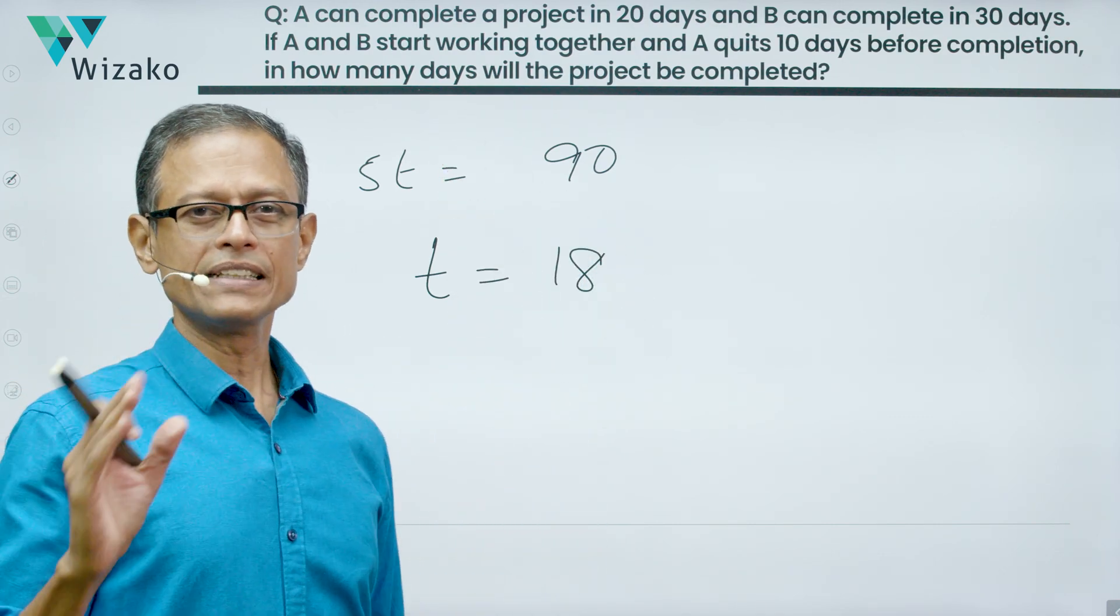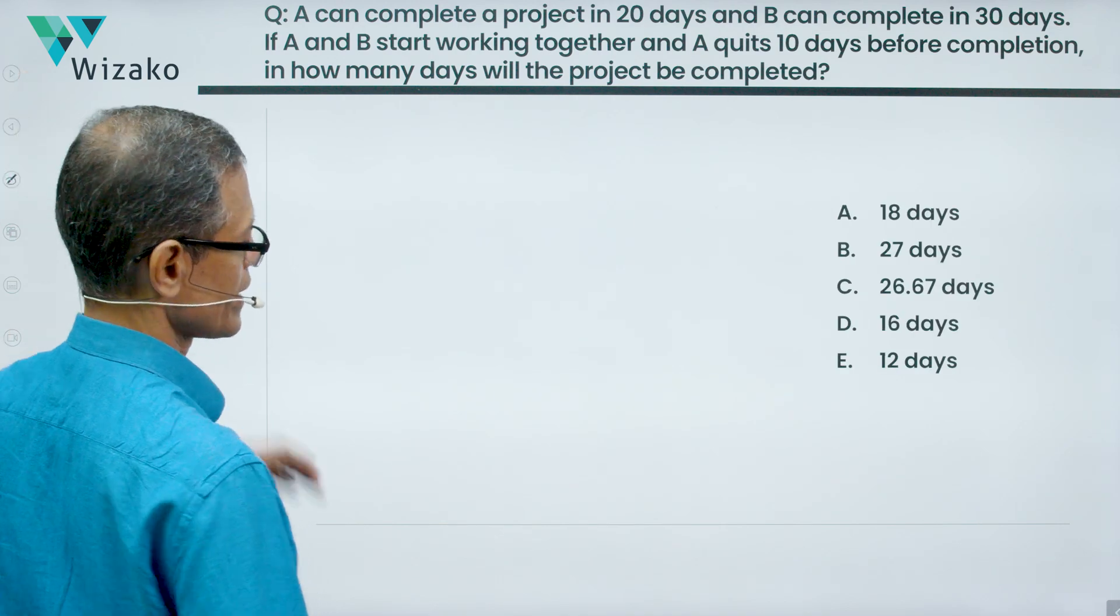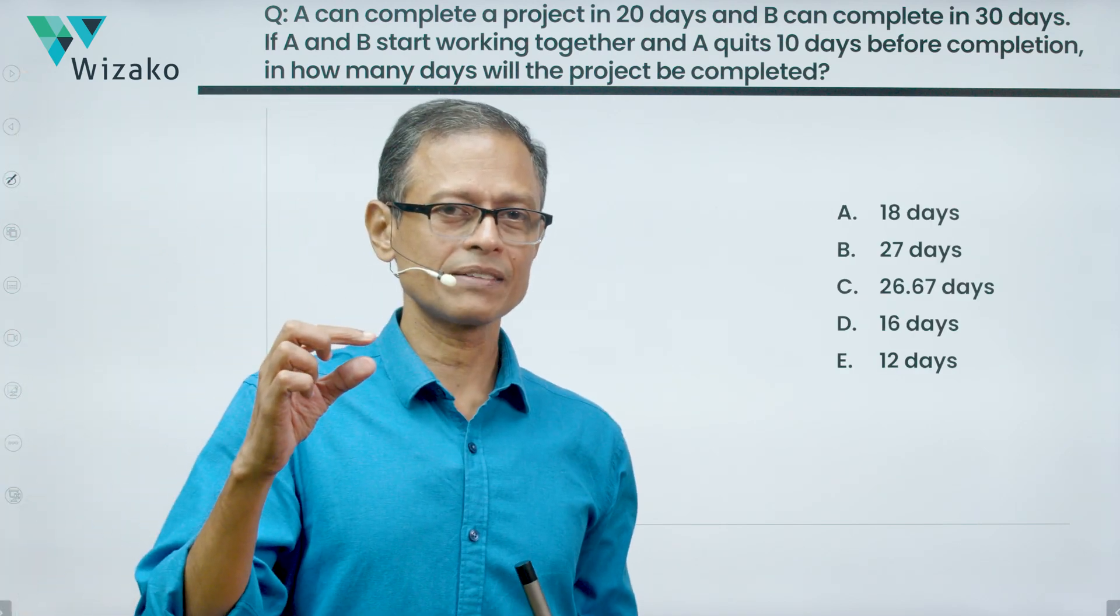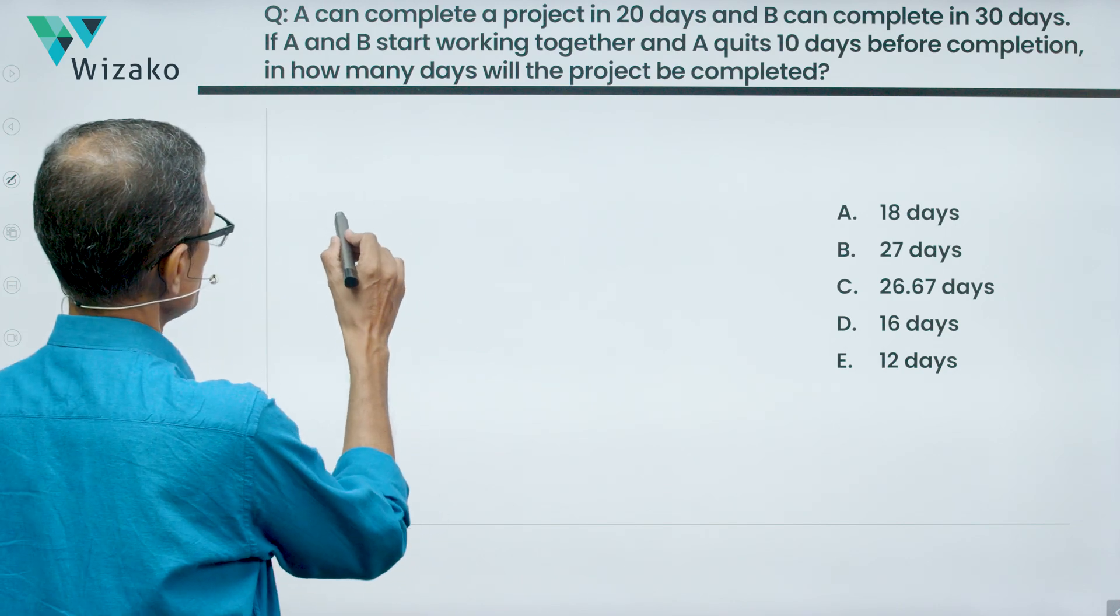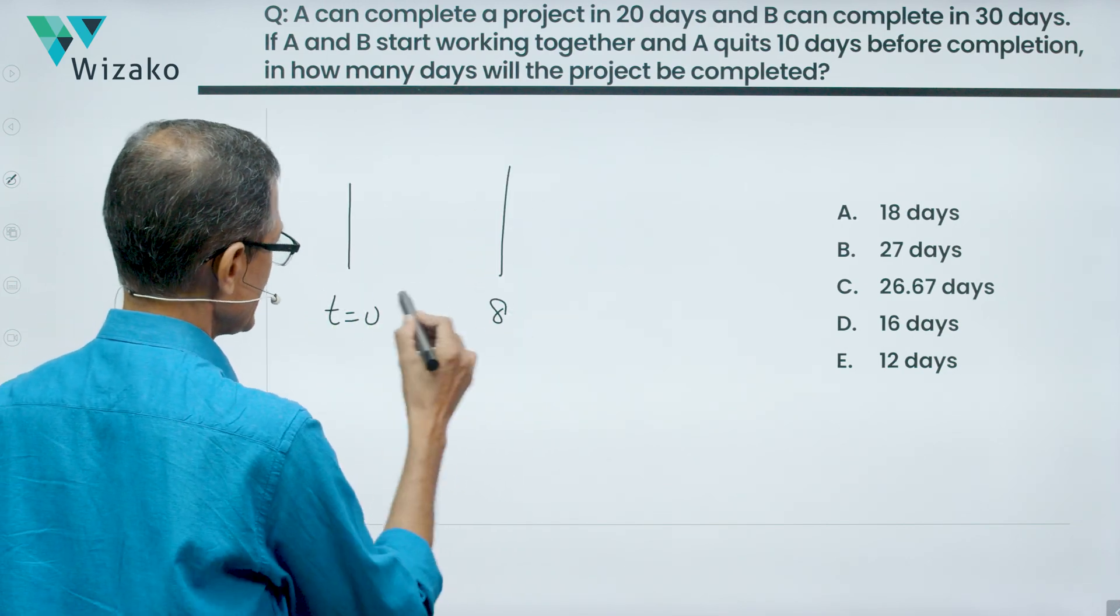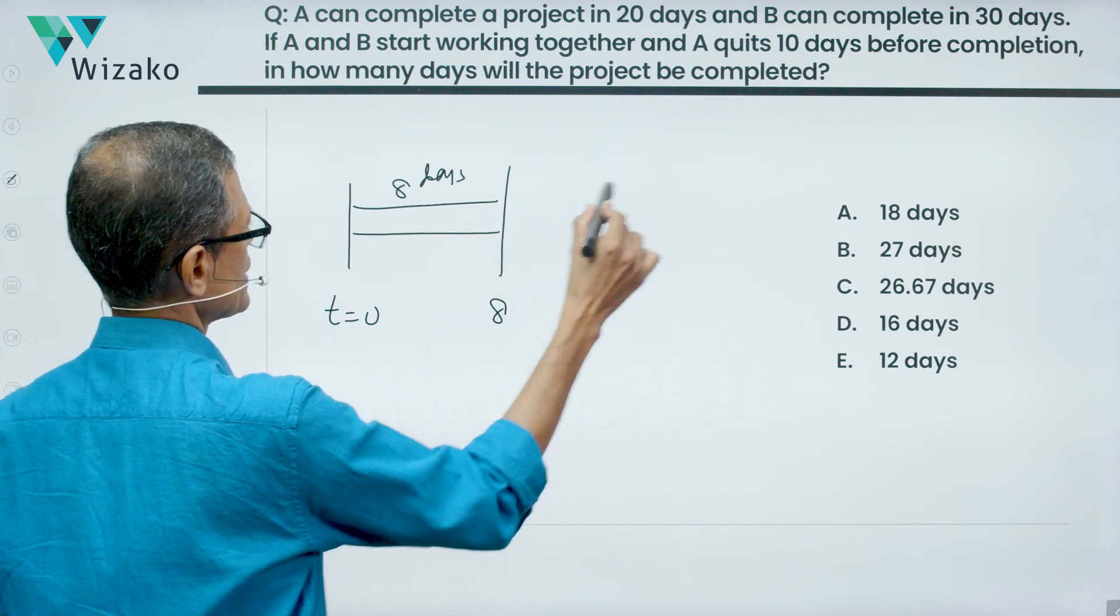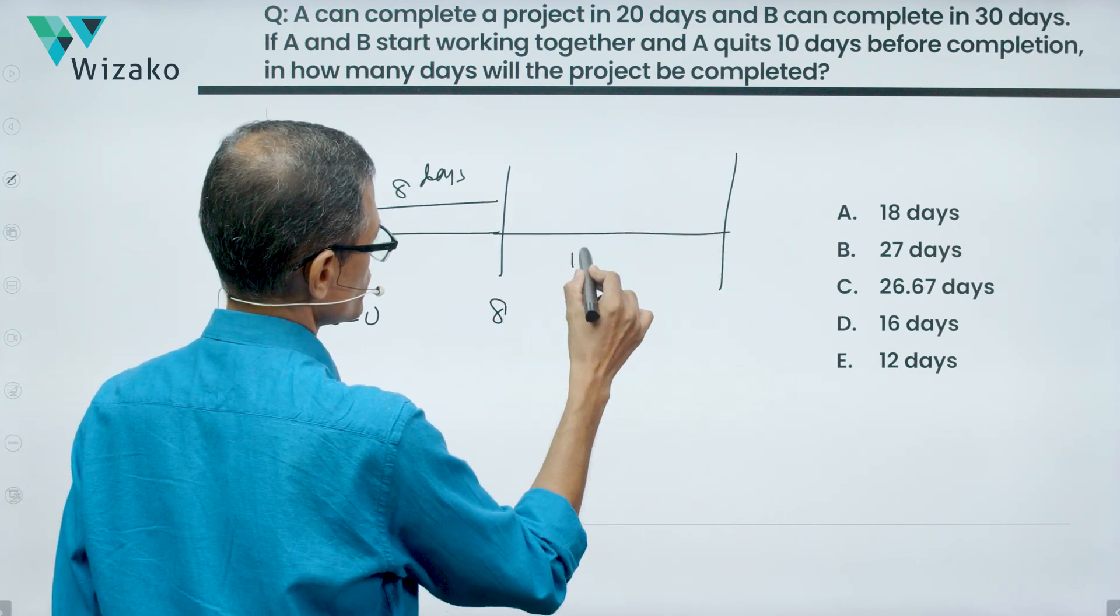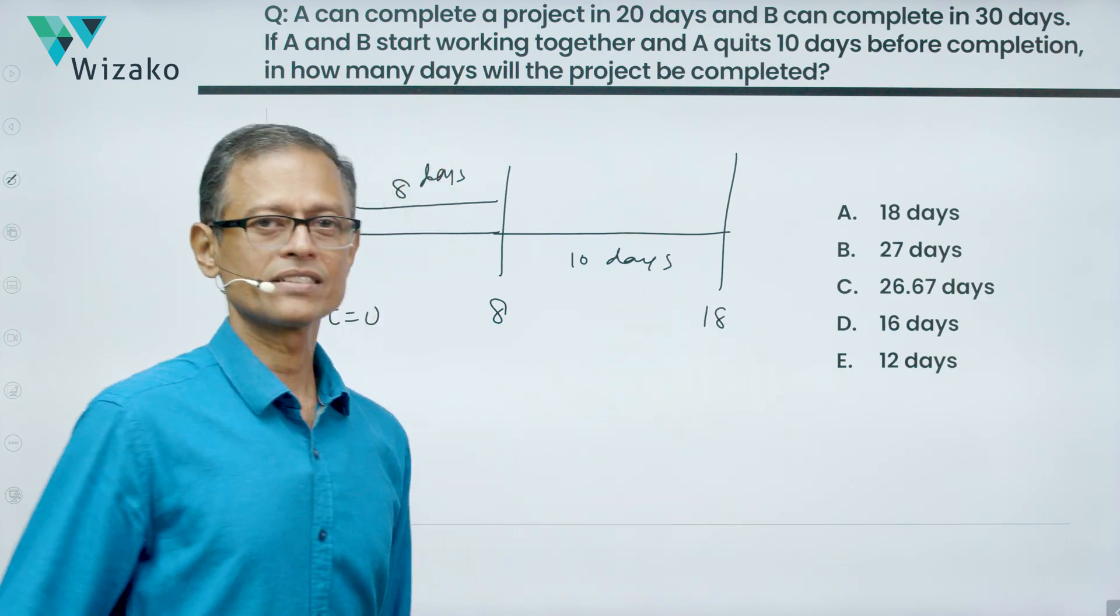What are we trying to find out? T. T is the number of days it takes to complete the task. It takes 18 days to complete the task. If they both start the work together and during the last 10 days, A does not work. So first, timeline T is equal to 0. T minus 10 will be 8 days. So A and B work together for 8 days. And then the last 10 days, it's only B who works and completes the task. Totally 18 days, the project gets done.